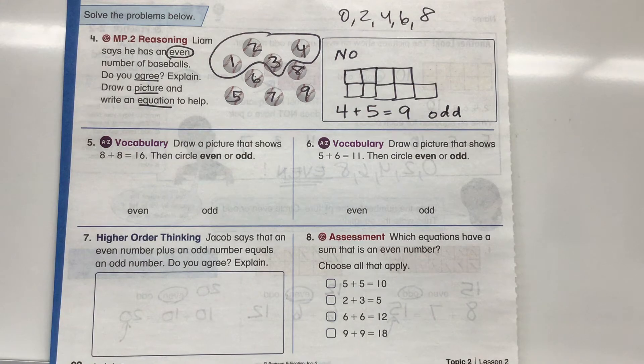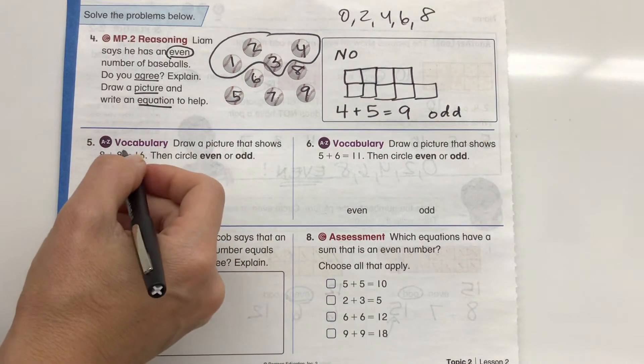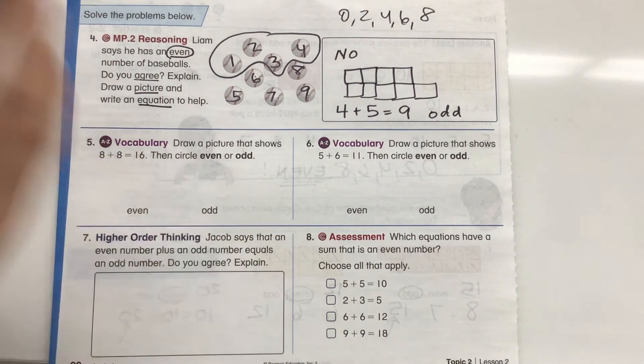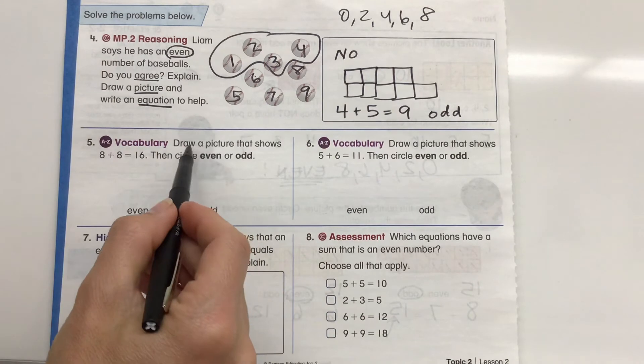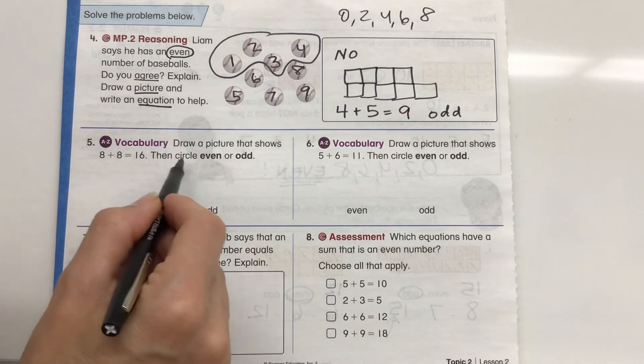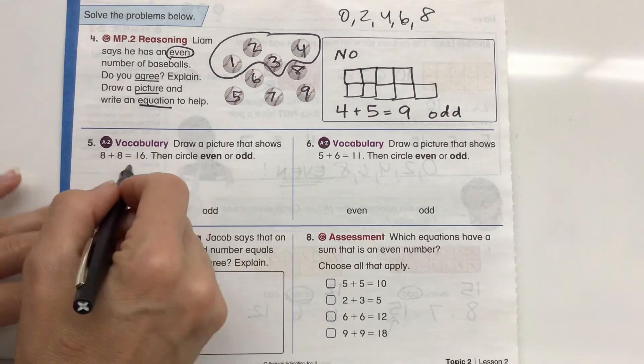Okay? All right. Let's take a look at our vocabulary. This is great. You guys are amazing with your academic vocabulary. You know big words like equations and sums and addends. So you're going to do great on this. Draw a picture that shows 8 plus 8 equals 16. Then circle even or odd.